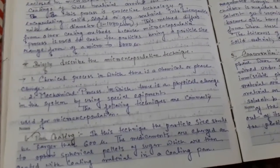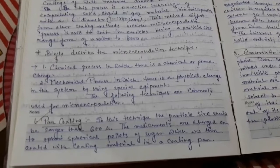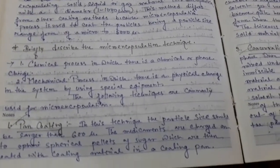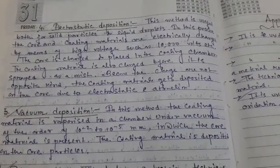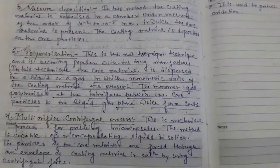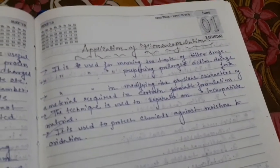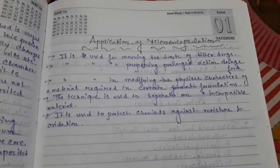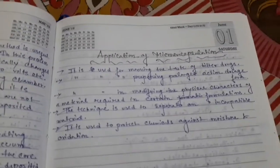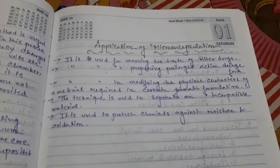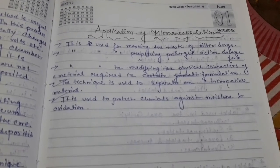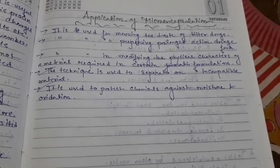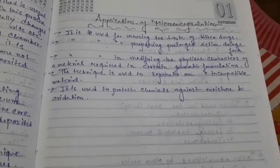Briefly discuss the microencapsulation technique: pan coating, fluidized bed coating, and coacervation. Other methods include electrostatic deposition, vacuum deposition, polymerization, and multi-orifice centrifugal. Applications of microencapsulation: it is used for masking the taste of bitter drugs, preparing prolonged action dosage forms, modifying the physical characters of materials required in certain formulations, separating incompatible materials, and protecting chemicals against moisture and oxidation.